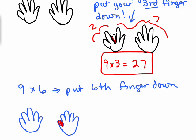On the left hand, you don't do anything with those 5 fingers, but here's the 6th finger right here in red. So there are going to be 5 fingers up until that finger that you put down, and then there's 4 fingers to the right. So 9 times 6 is 54.